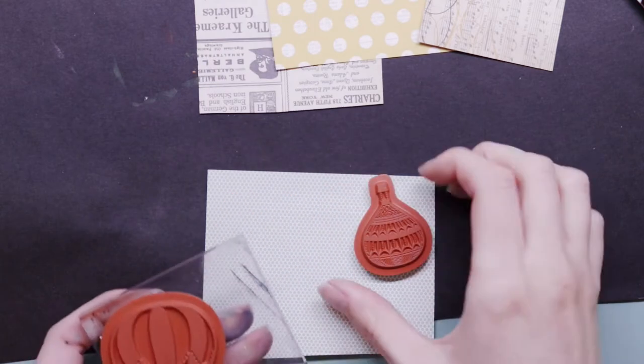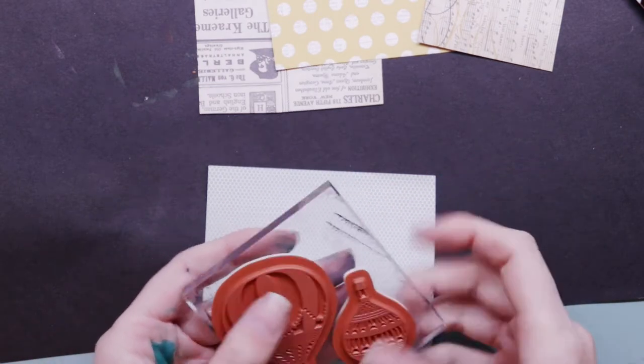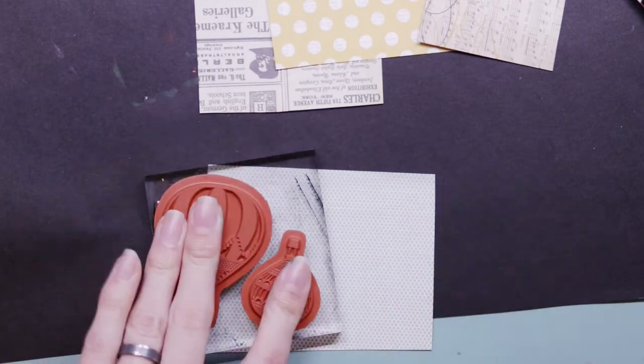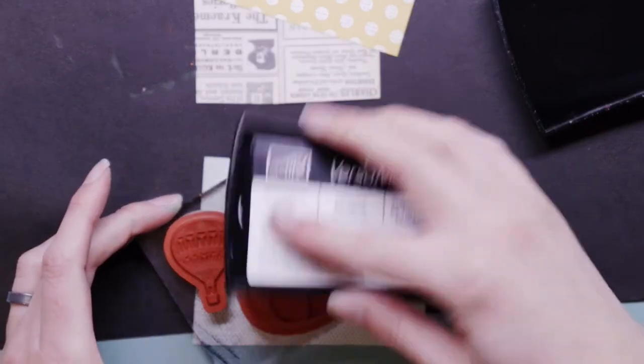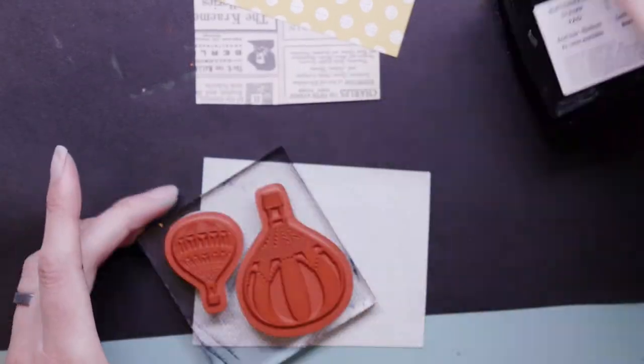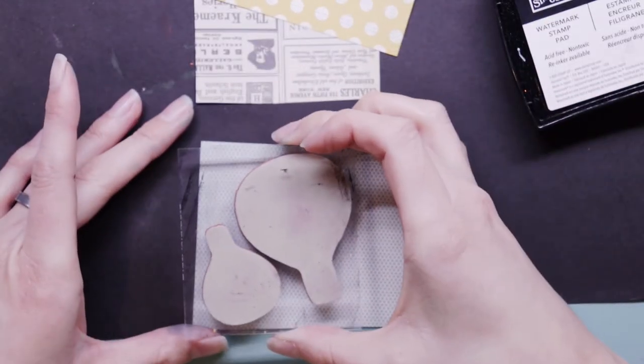To start off, I'm going to use Versamark ink. It's a clear ink, but it's also great for embossing. So because I need everything to be clear, I'm going to use the Versamark ink.